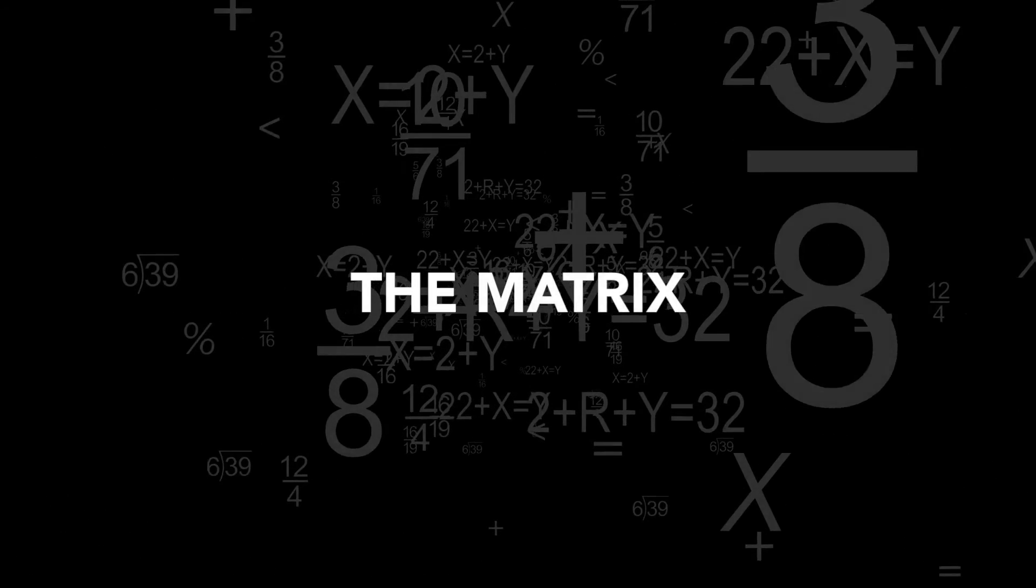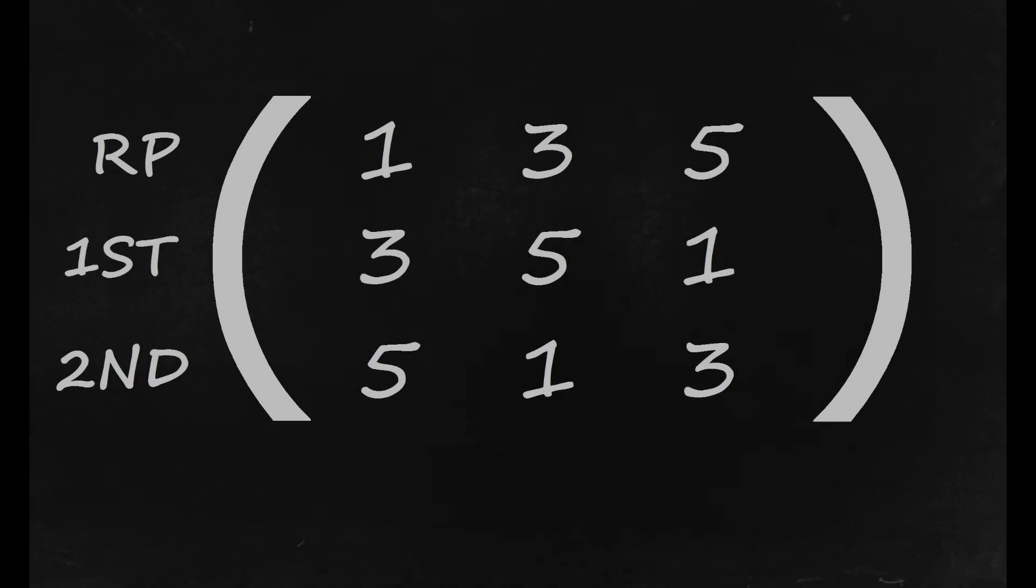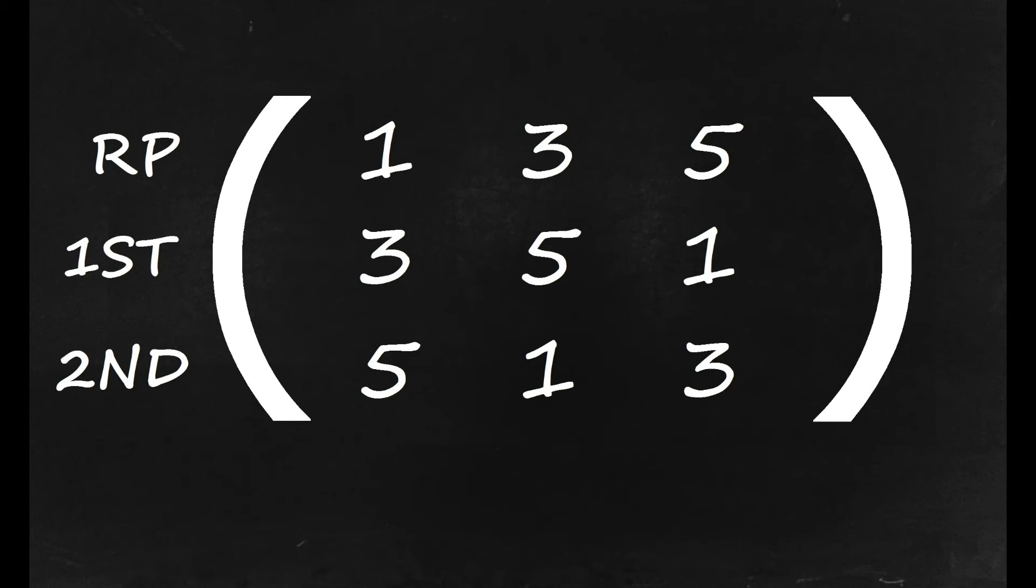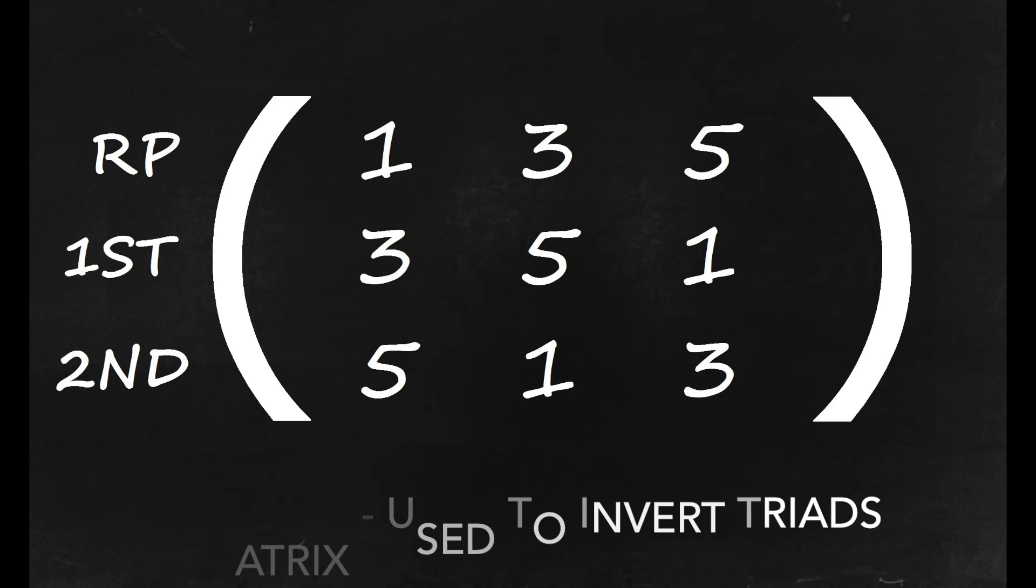The sound and shape of a triad can be modified by something called a matrix. A matrix uses combinations of one, three, and five so that the numbers remain in numerical order vertically and horizontally. Let's have a look at what that would look like in the key of C using a C major triad.